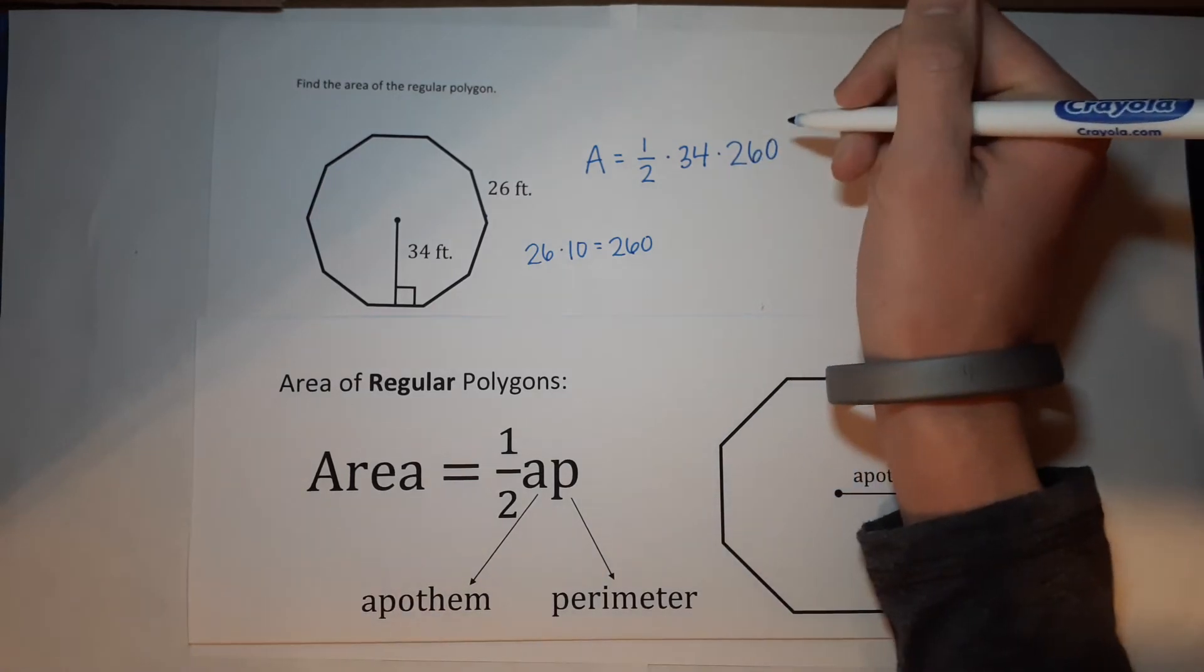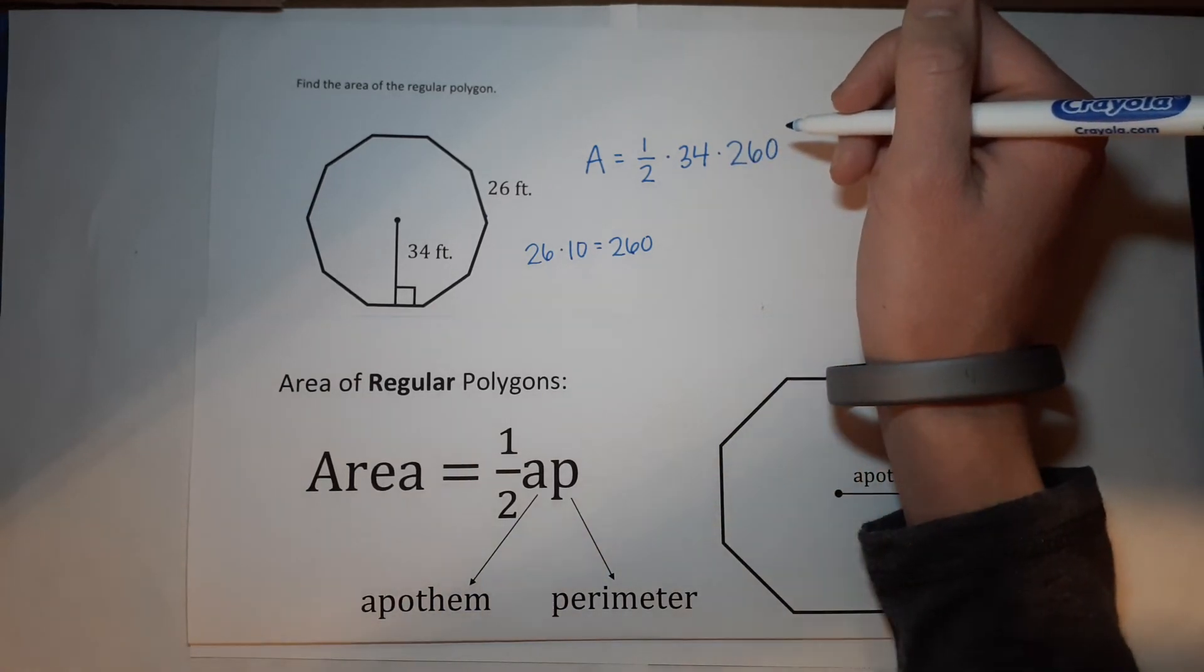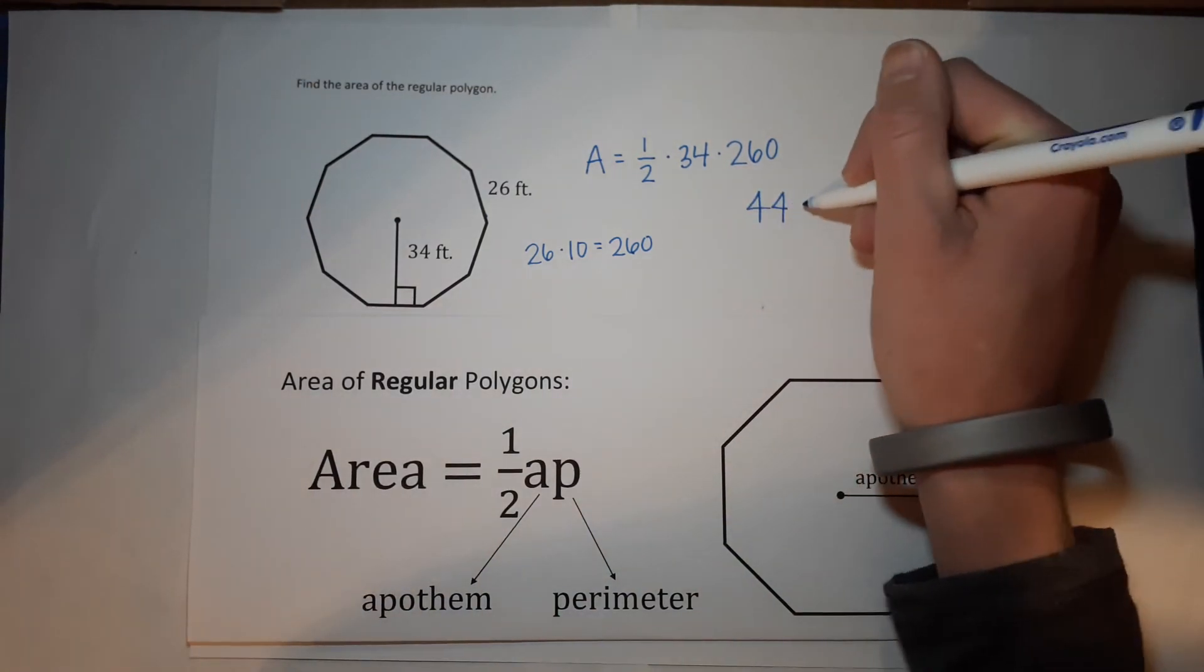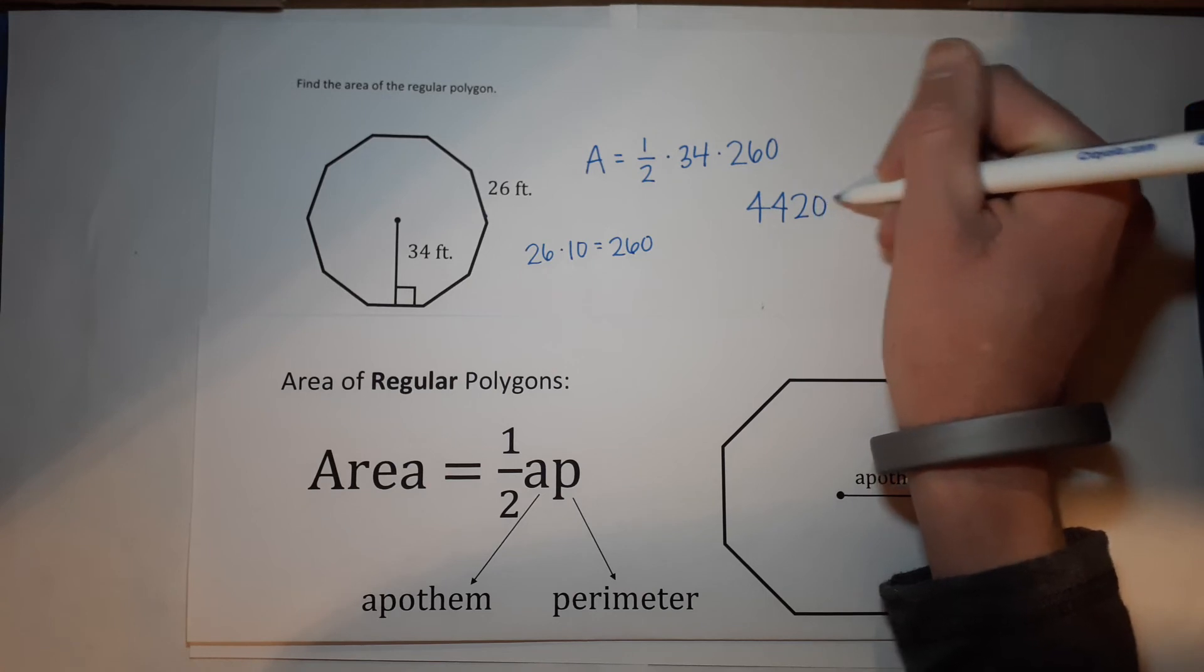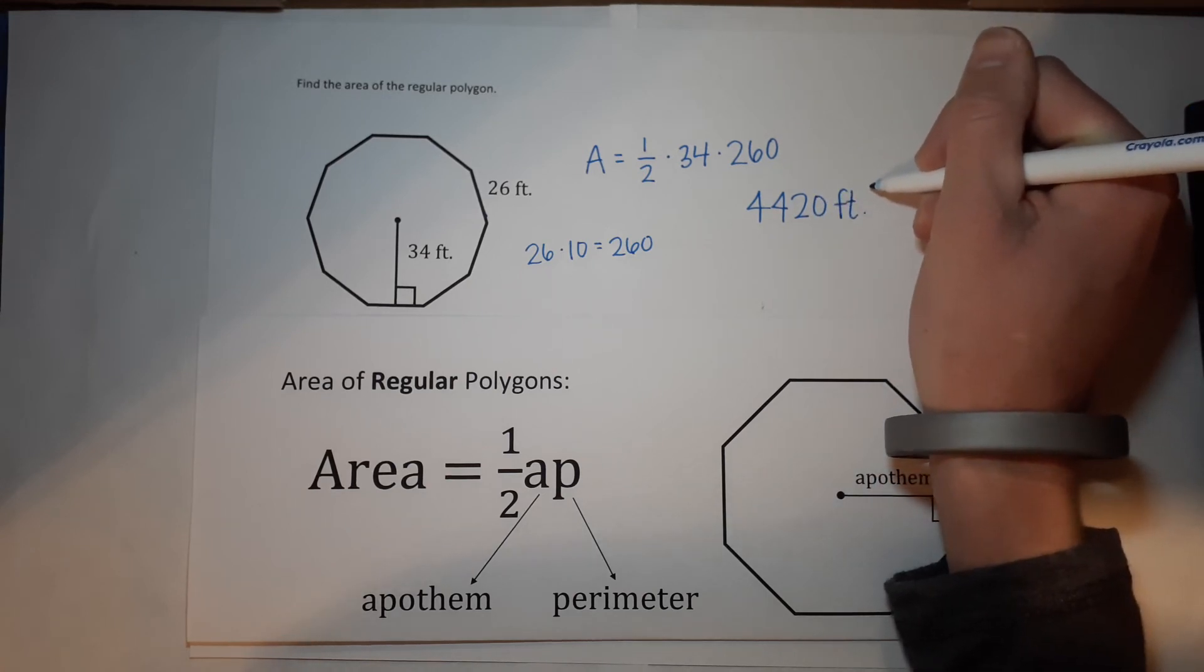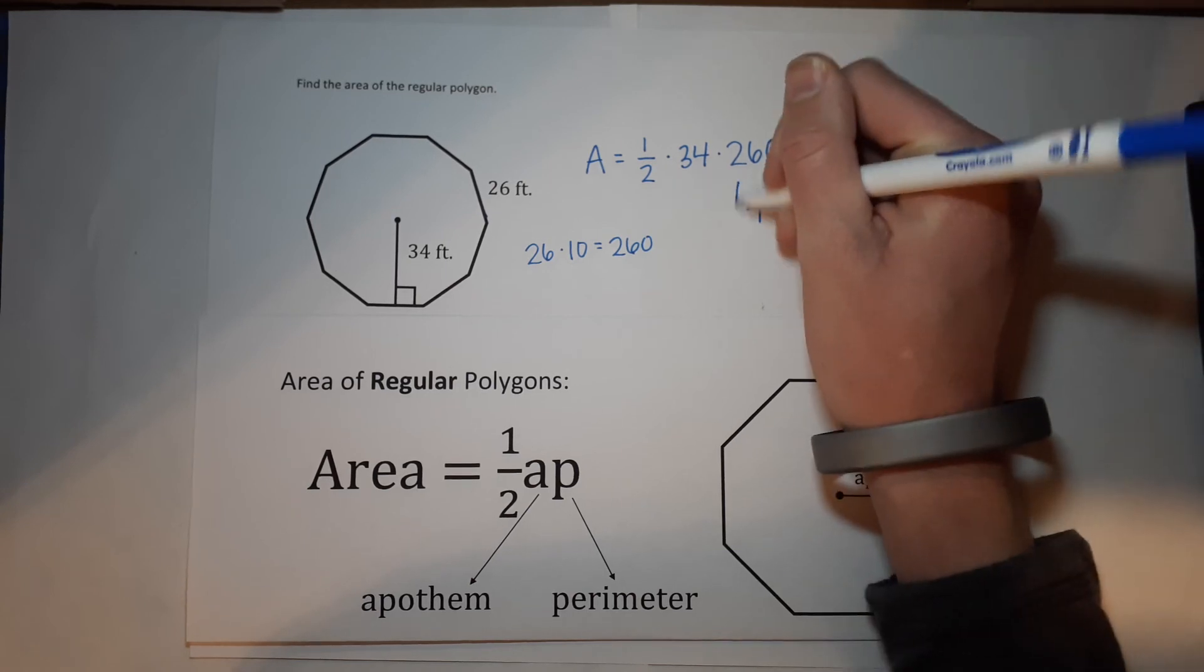All right, now you can just stick that in your calculator. And we get 4,420 feet. But not just feet because it's area. And we always label area feet squared or square feet.